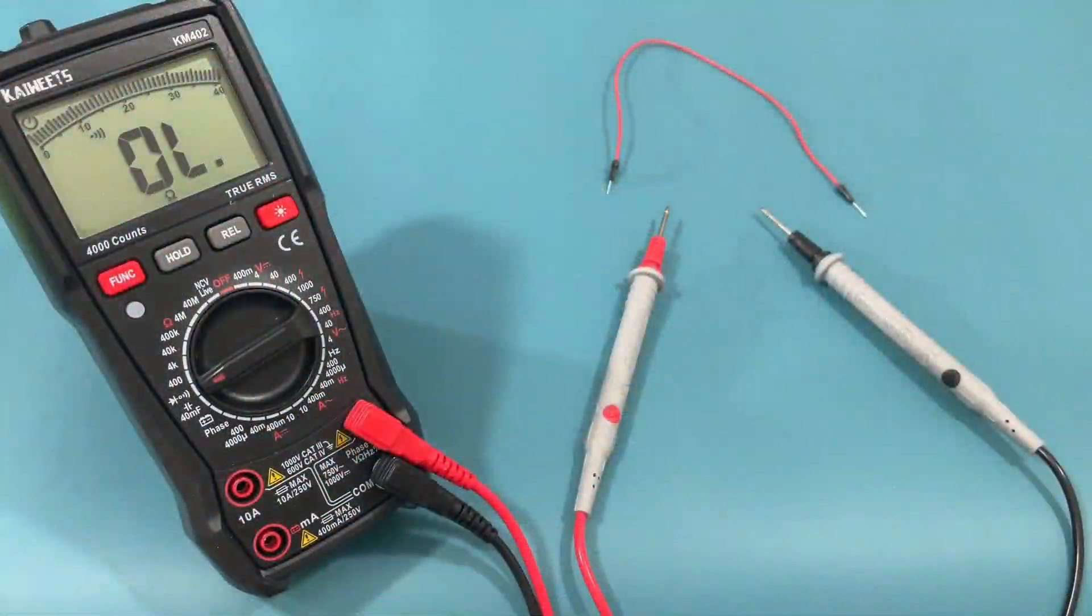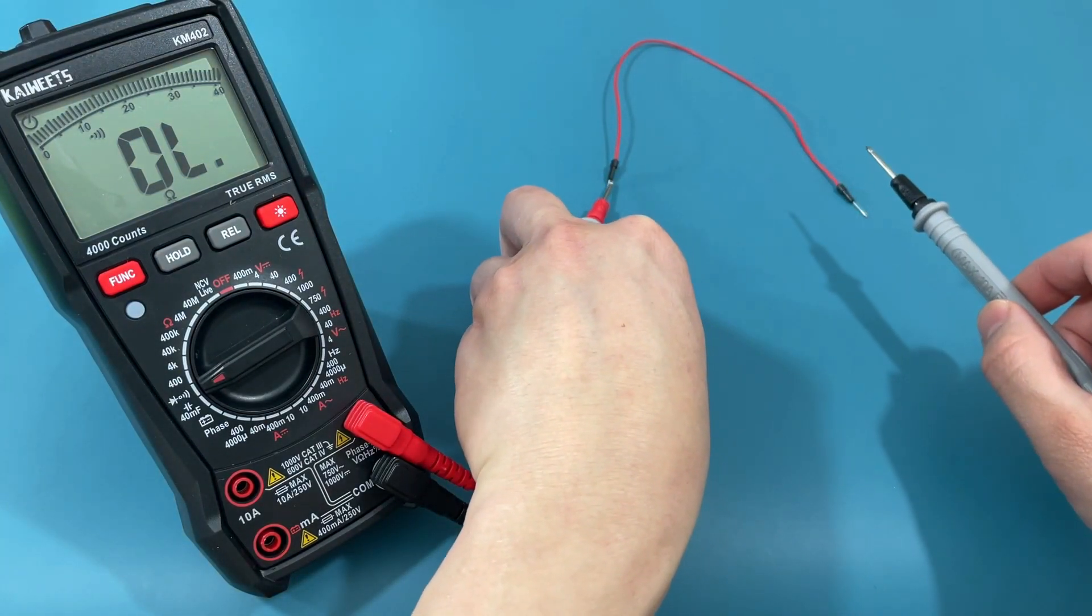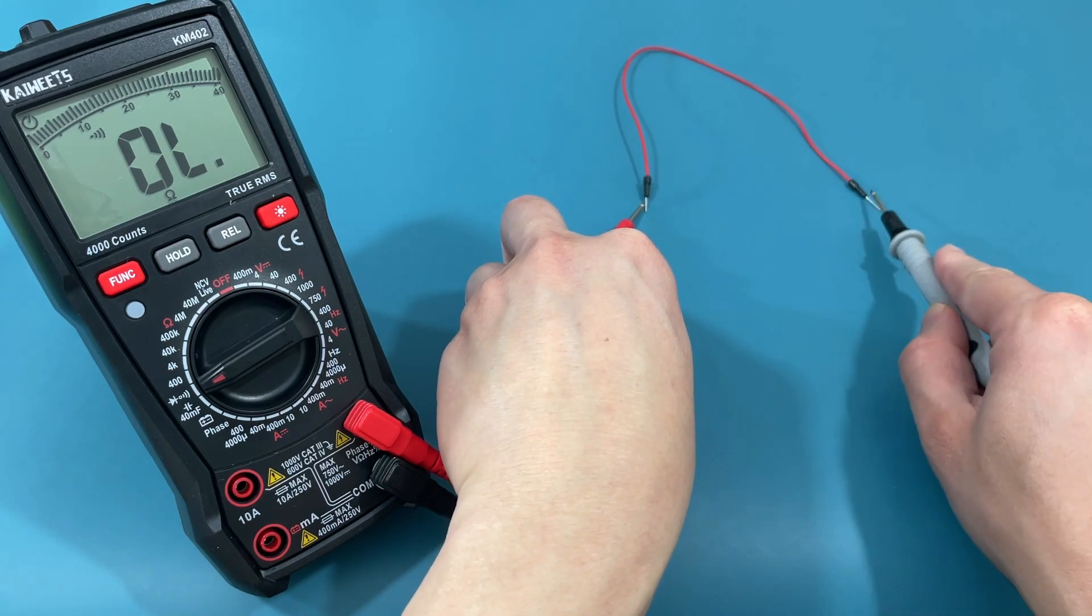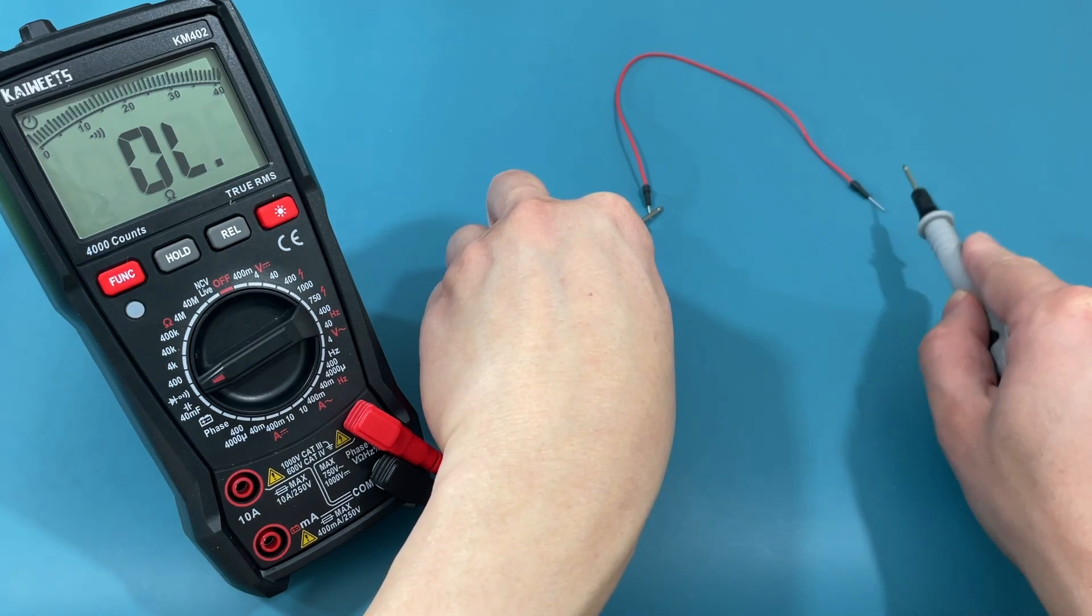This second wire is a jumper wire used in a breadboard. Like the first test, touch each probe to the end of the jumper wire. If you hear a beep, there is continuity.